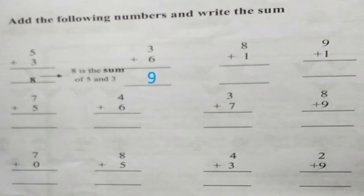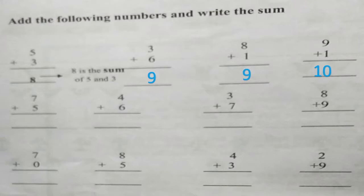Now eight plus one — it is nine. How much is nine plus one? It is ten. Let's add seven and five. Keep seven in your mind and five on your fingers, and count after seven — eight, nine, ten, eleven, twelve. So let's write twelve.